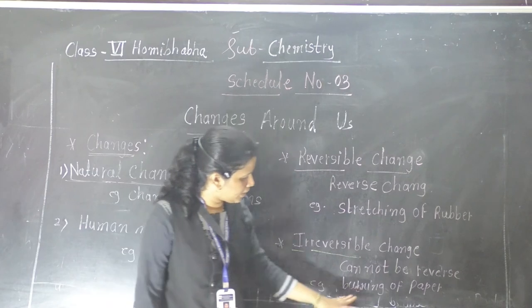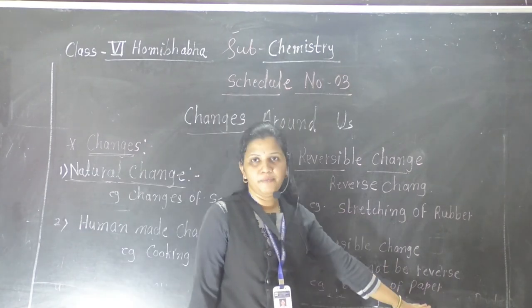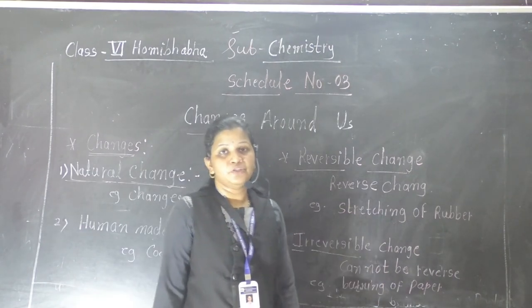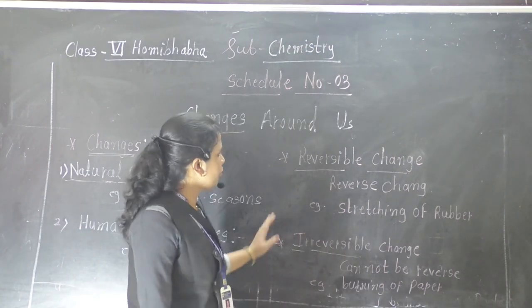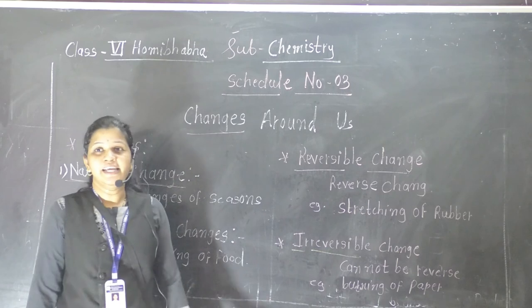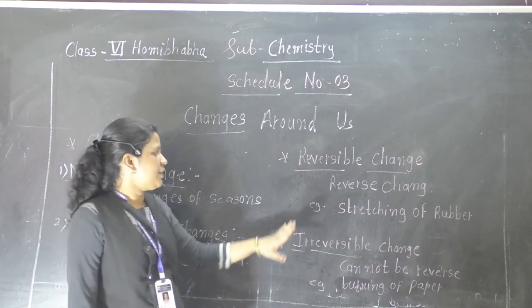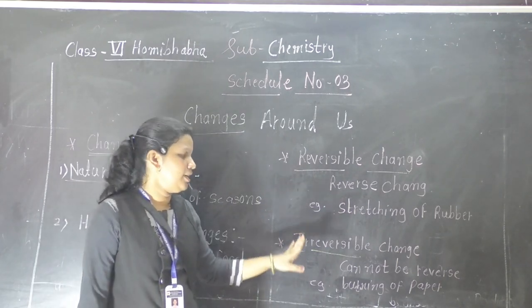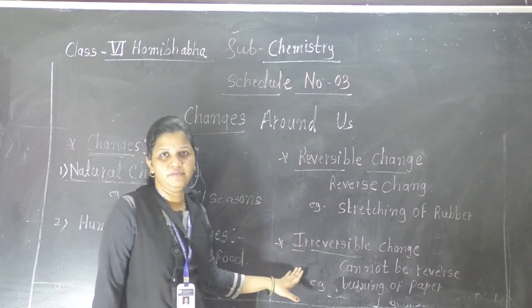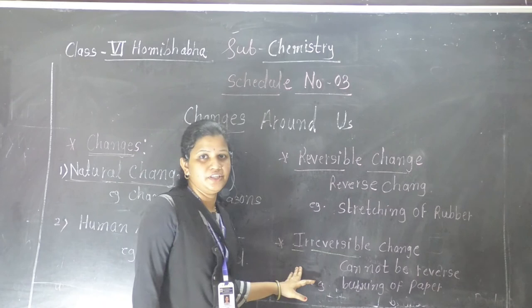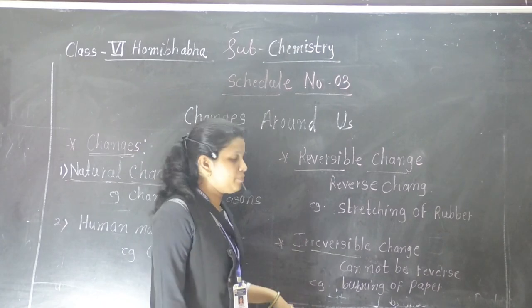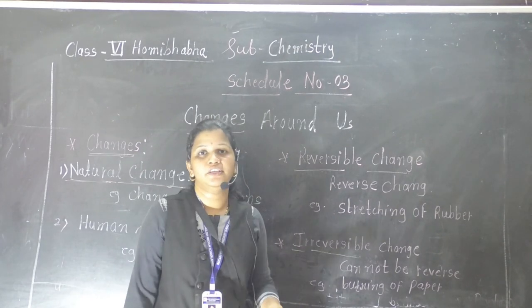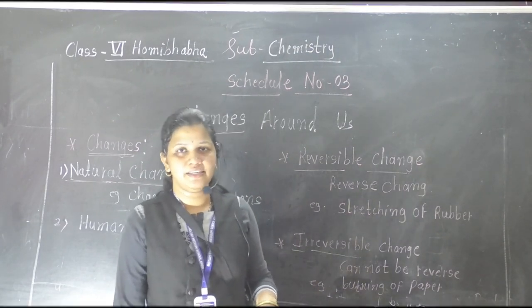For example, burning of paper is an irreversible change. Your homework is to write 10 examples each of reversible changes and irreversible changes. We will continue the next point in the next lecture. Thank you.